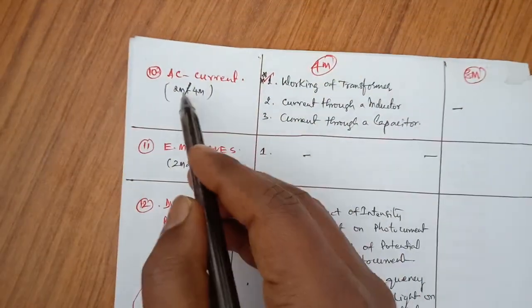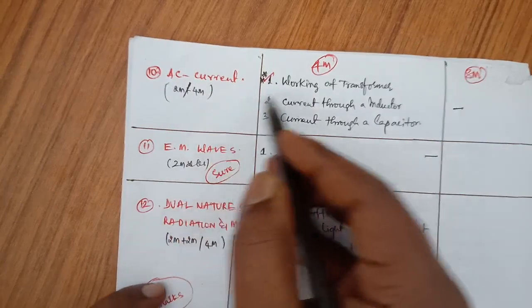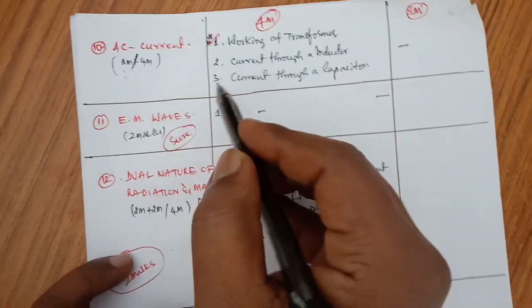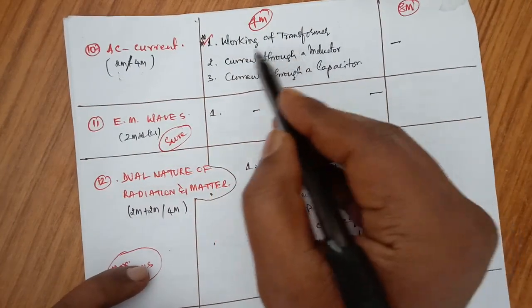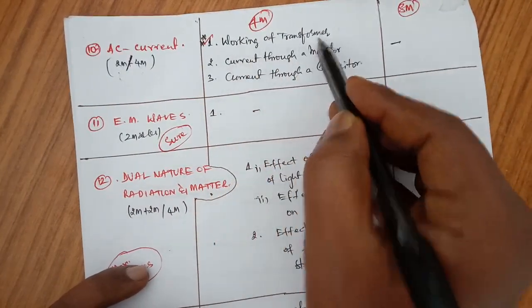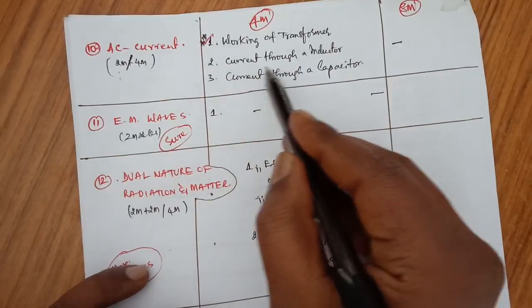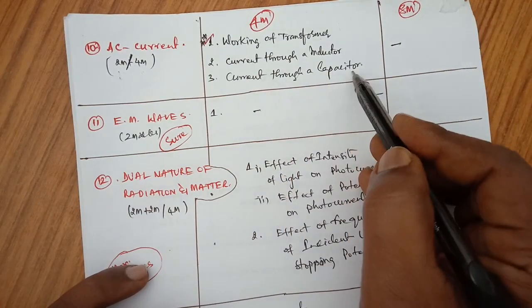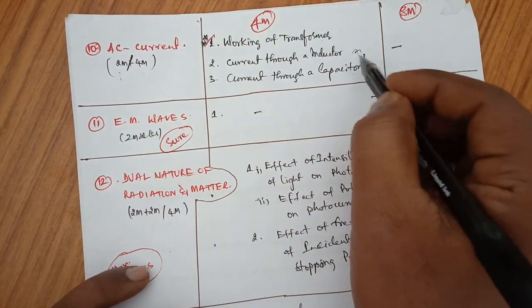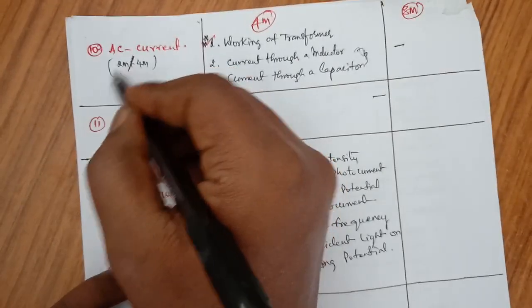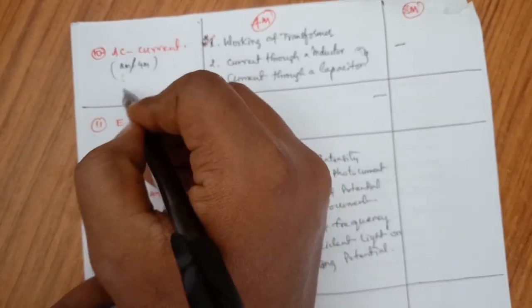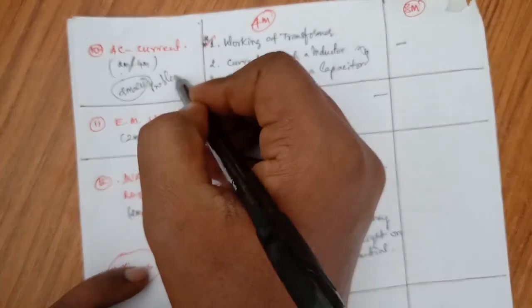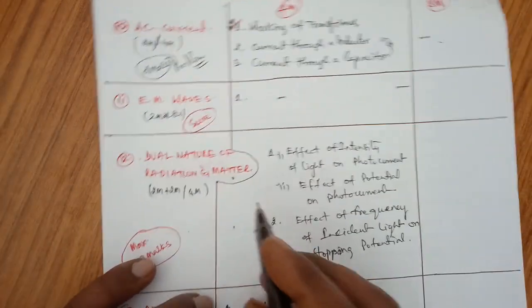Chapter 10 is Alternating Current (AC). Almost 2 marks questions may be asked, or sometimes 4 marks as well. Working of the transformer is very important. Current through an inductor and current through a capacitor are also important — go through the 2 marks questions and some 2 marks problems. There is no 8 marks question from this chapter.